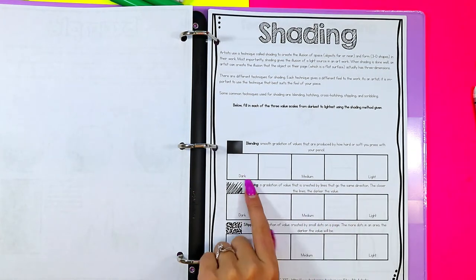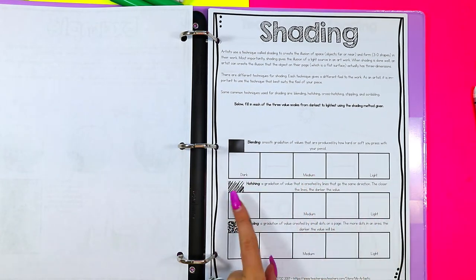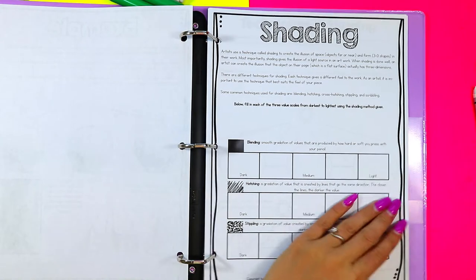So we'll talk about shading. Your kids will be creating value scales with blending, hatching, and stippling.